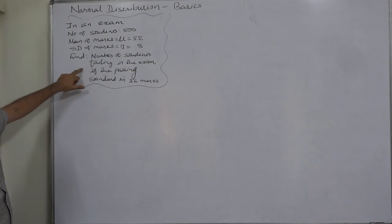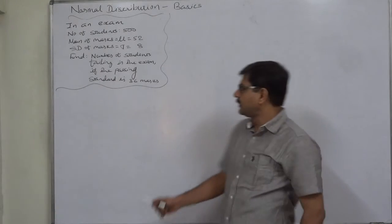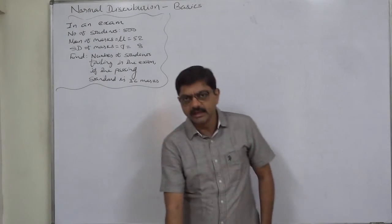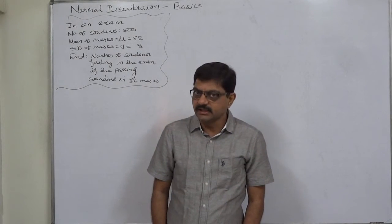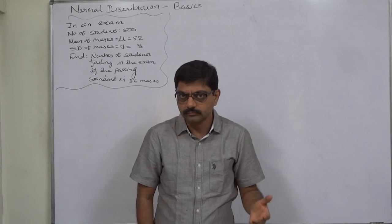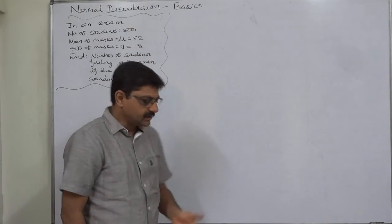Find the number of students failing in the examination if the passing standard is 36 marks. That means if any student obtains marks 36 or more, he or she is declared a passed student.